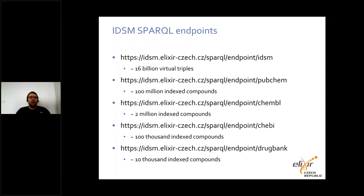Currently, as part of our project, we operate several SPARQL endpoints. The most important endpoint integrates data from PubChem, ChEMBL, and ChEBI datasets — currently containing more than 16 billion virtual triples. Other endpoints support substructure and similarity search in PubChem, ChEBI, ChEMBL, and DrugBank datasets. The biggest one is the PubChem endpoint, allowing substructure and similarity search among more than 100 million compounds.